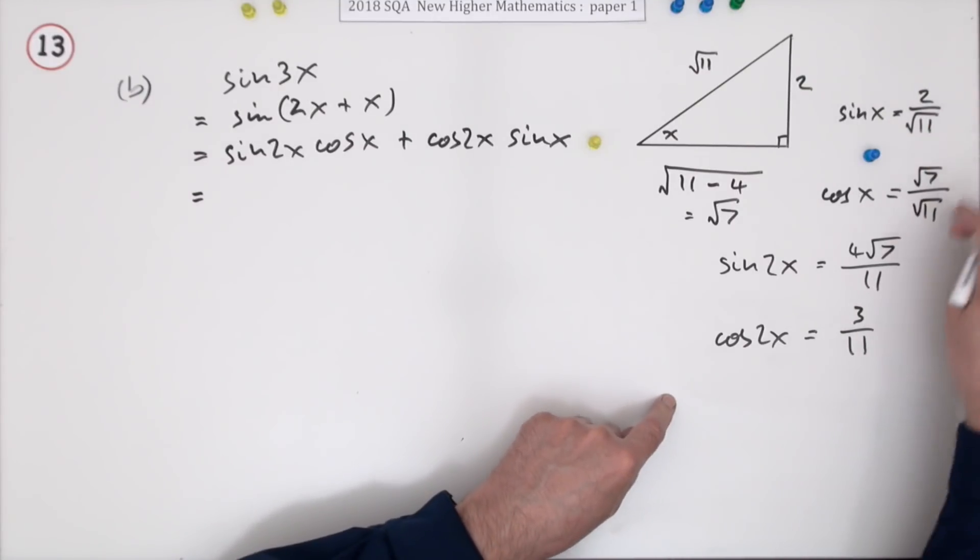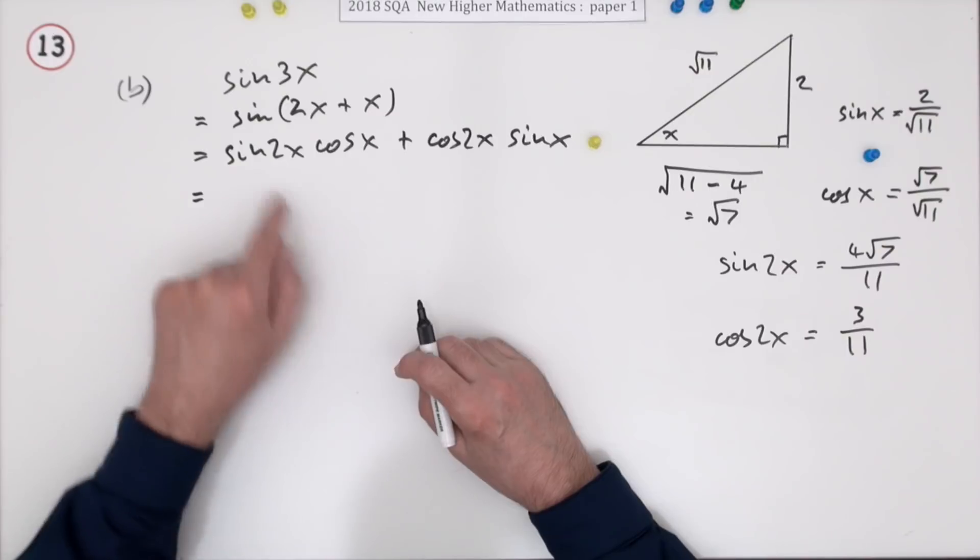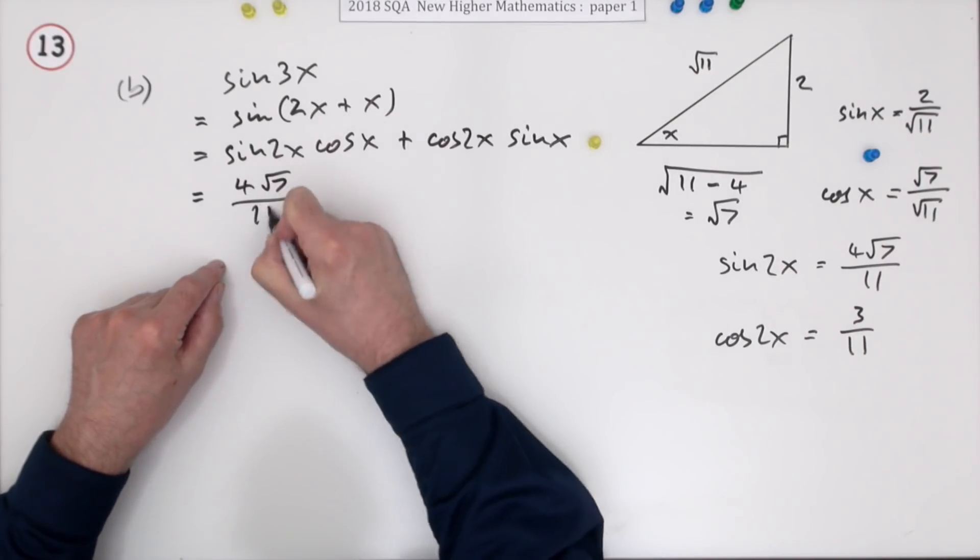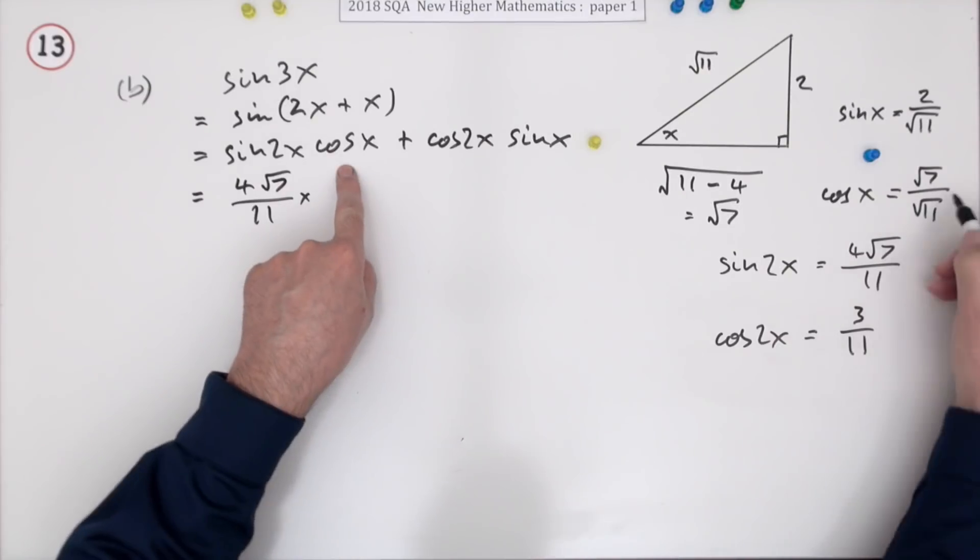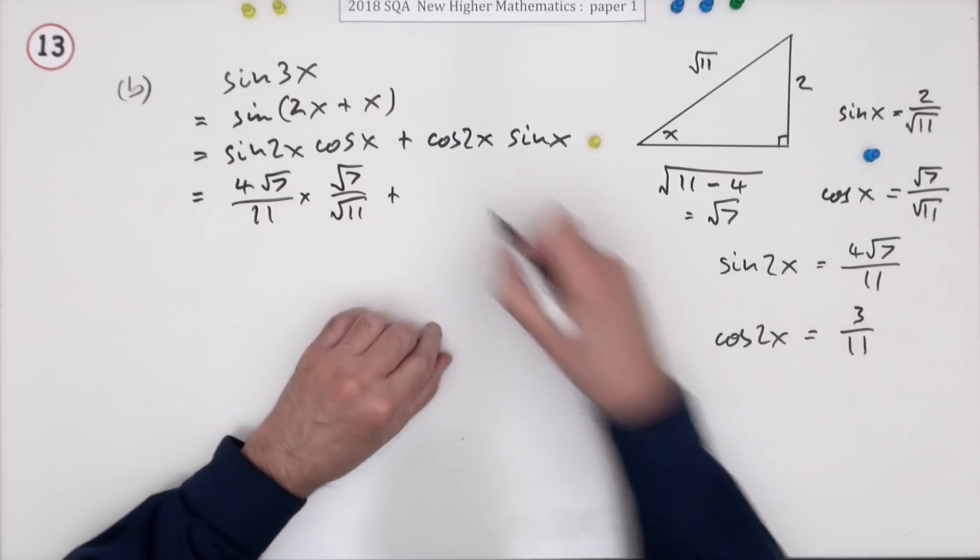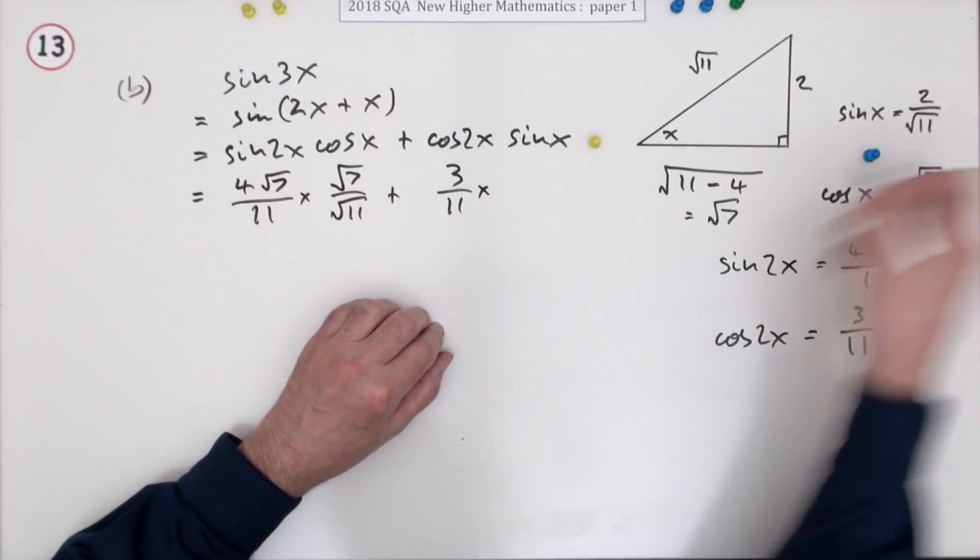Because after all, in the first part you've got all the numbers to put into it. You worked out sine 2x: 4 root 7 upon 11. You had cos x: root 7 over root 11. You had cos 2x. You had them all, and it even told you that first one, not that it needed to. Now doing that gets a mark.